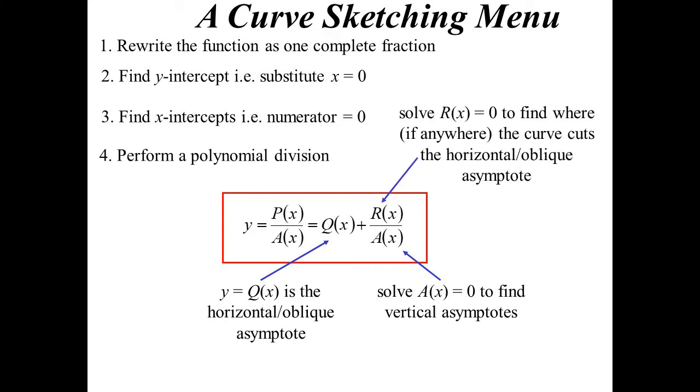And as I say, the top of the fraction in this form, well, that will tell us if it cuts that horizontal or oblique asymptote. Other things to just look for are things like symmetry, because that can be useful in drawing graphs, because if you know it's got rotational symmetry or reflectional symmetry.